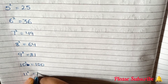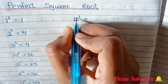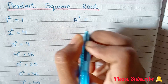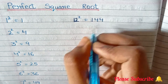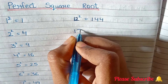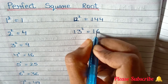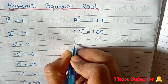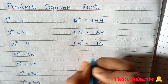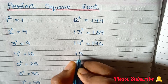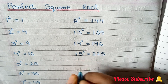11 square is equals to 121. 12 square is equals to 144. 13 square is equals to 169. 14 square is equals to 196. 15 square is equals to 225.